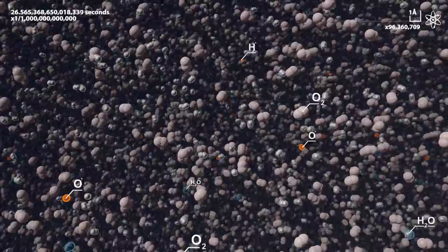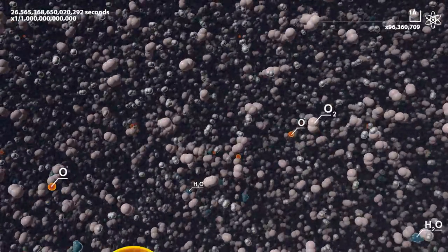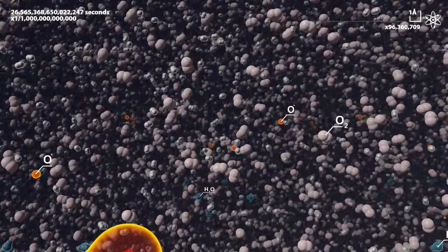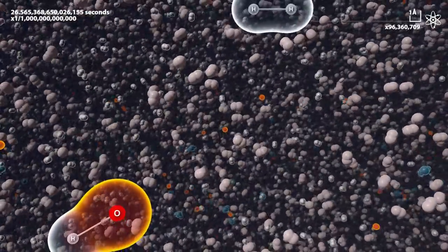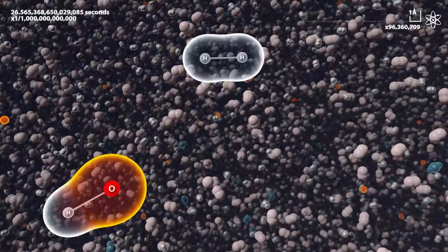In normal molecules, all electrons sit in pairs. But radicals have unpaired electrons. They want to find a pair for their lonely electron. That makes them ideal for reacting with other particles.